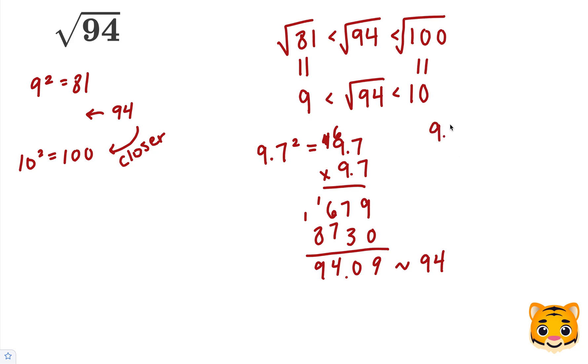We can then say that 9.7 squared is approximately 94. Taking the square root of both sides will allow us to cancel the squared and the square root for the 9.7. We can then write that 9.7 is approximately the square root of 94. This will be our estimated answer.